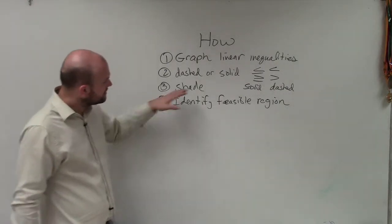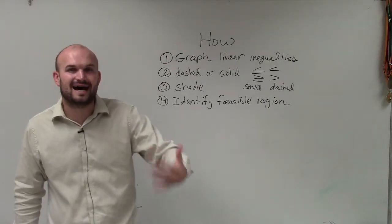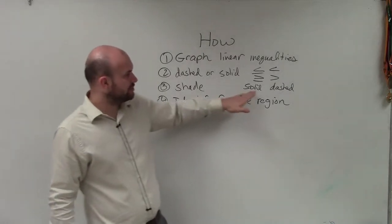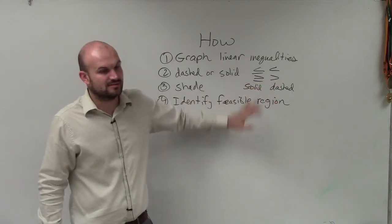The next thing we need to do is identify the shading. It's very important to pick a point that is not on either of your linear inequalities that you graphed. If it is, you're just testing if those points are true or false, which you can easily identify from the inequality symbol.